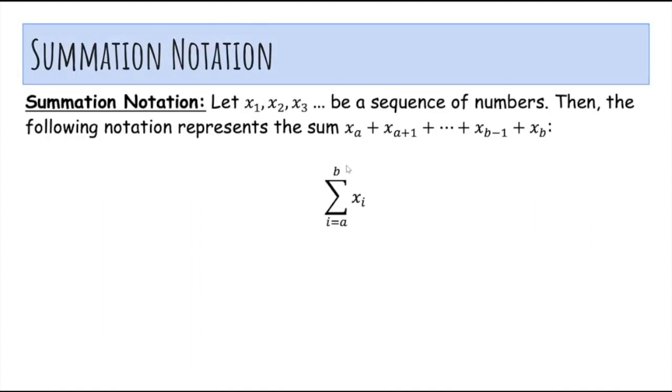So in general, if x1, x2, x3, etc. are a sequence of numbers, then you can use the following notation for the sum of all the terms from x sub a all the way up to x of b. So we sum from i is equal to a up to b of x sub i. So this actually generates all these terms because we start from i is equal to a, and it includes all the integers from a up to b.